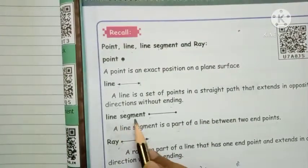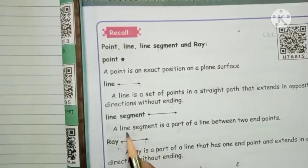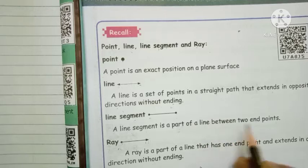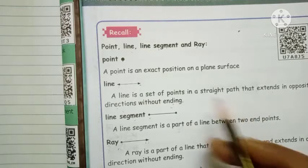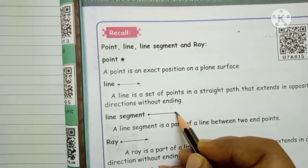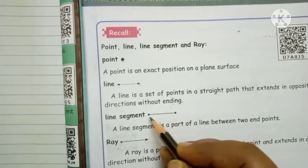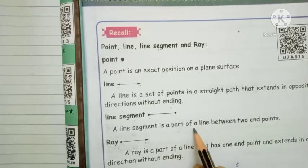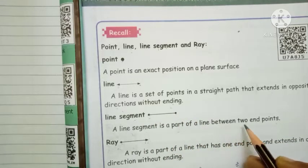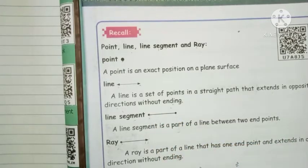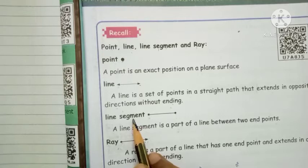The next one: line segment. A line segment is a part of a line between two endpoints. You already studied points. This line has two points — one and two endpoints. So a line segment is a part of a line between two endpoints — that is called a line segment.